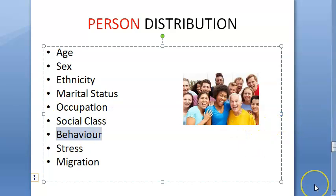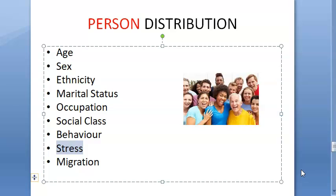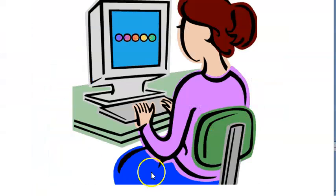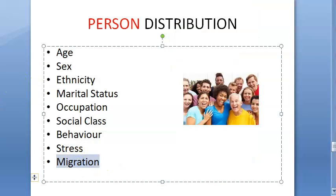Behavior decides your health. Stress — type A personalities who want to achieve everything in life will have some kind of diseases. Migration: if people move from one place to another, they may be affected based on the local environment or based on their genetics. That all comes in migration studies.